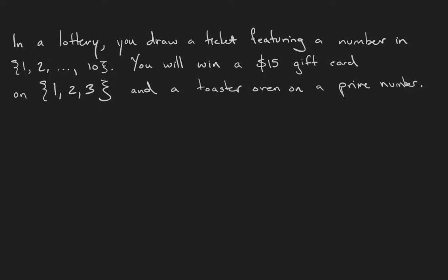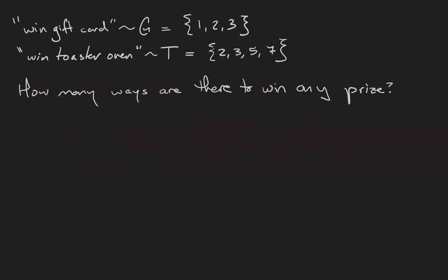In this case the event win gift card corresponds to the set of outcomes 1, 2, 3, and win toaster oven corresponds to the set 2, 3, 5, 7. We'll use G to talk about the first set, we'll use T to talk about the second set.